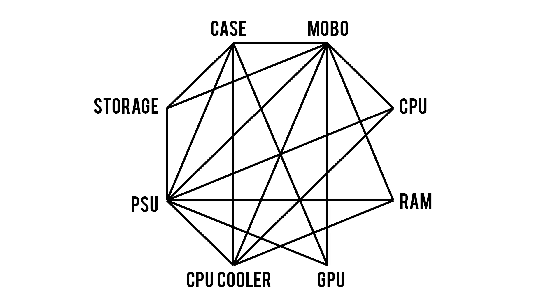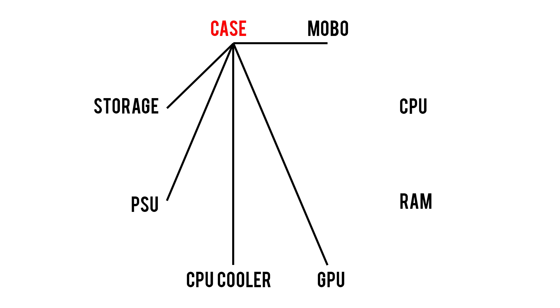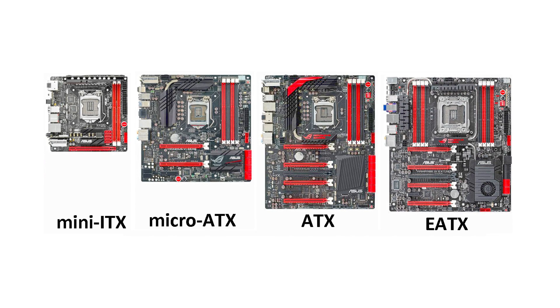Here's what all the compatibility lines for every part looks like, and we'll be going over each of these today. Rather than trying to tackle all these lines at once, let's start by talking about the computer case and work our way around the Octagon. The relationship between cases and motherboards is pretty simple. Motherboards come in a number of sizes or form factors, but the most common ones from smallest to largest are mini-ITX, micro-ATX, ATX, and Extended ATX, or E-ATX for short.